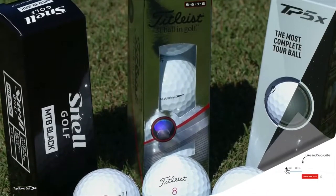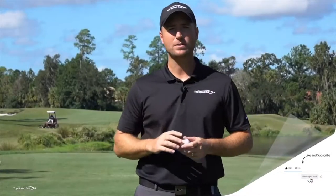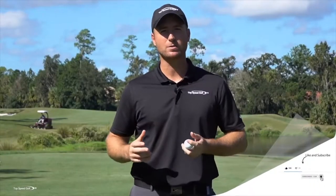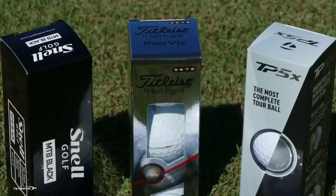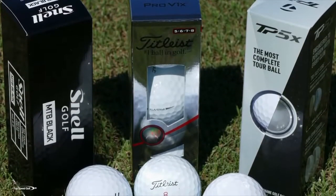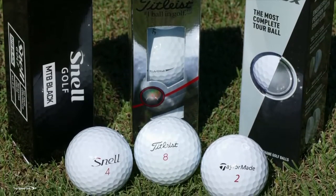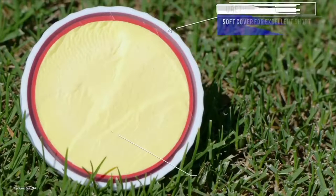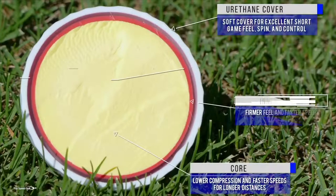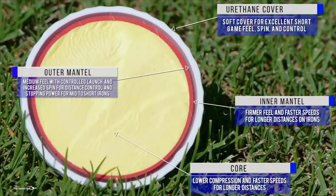First off, a dozen golf balls cost about twelve dollars to manufacture. So if you're going for a Titleist, TaylorMade, Callaway — whatever your favorite golf ball brand is — it's going to be roughly the same, because they're really using the same materials. They all have good quality control, and to be honest, there's really just not a lot of difference between them.